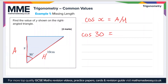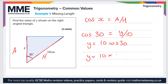Substituting in our values: cos 30° = y divided by 10. Rearranging to solve for y, we multiply both sides by 10 to get y = 10 cos 30°. Using our common values without a calculator: cos 30° = root three over two. Simplifying, y = (10 / 2) × root three = 5 root three. Remembering our units — the hypotenuse was 10 centimetres — so y = 5√3 centimetres.